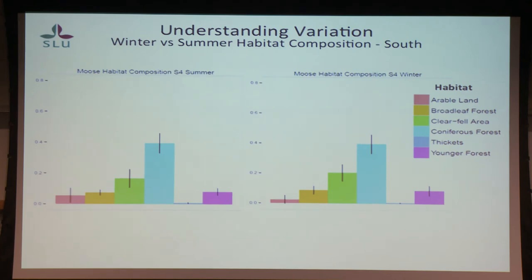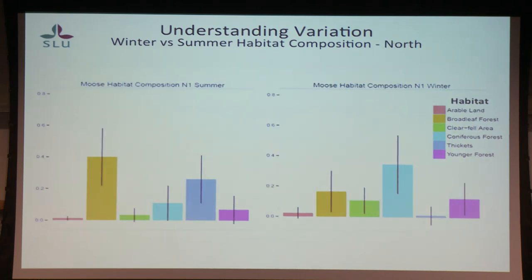If we look at the seasonal home range composition: in the south, as you can expect given it's mainly sedentary movements, the habitat composition is the same between winter and summer. But if you look at the habitats of migratory moose in the north, in the summer it's mainly composed of broadleaf forests and thickets, whereas in the winter they're moving down to coniferous forests.